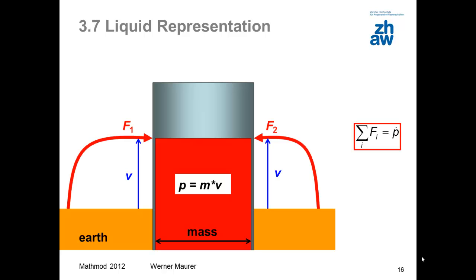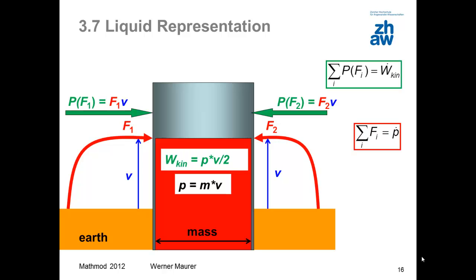The momentum balance is recognizable as a mass balance. Energy flow and power are directly recognizable, like in a waterfall. The kinetic energy equals the stored momentum, which is mass times velocity, multiplied by the mean pumping height. This energy corresponds to the work that must be done to transfer the momentum from the Earth into the body.